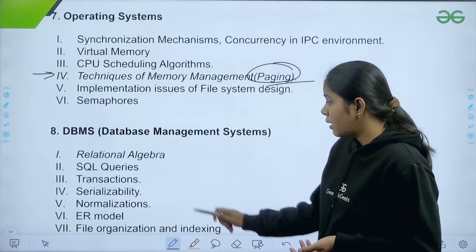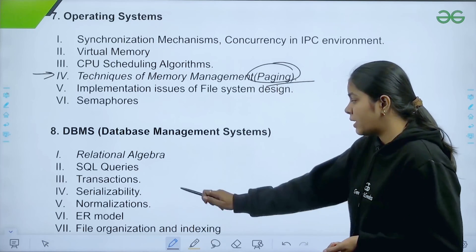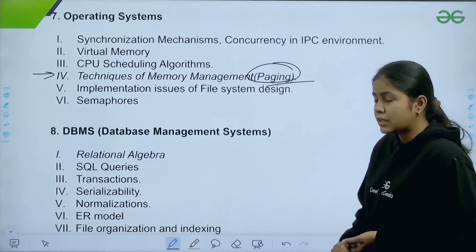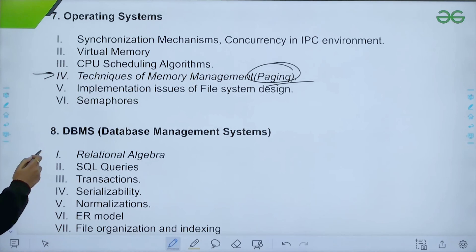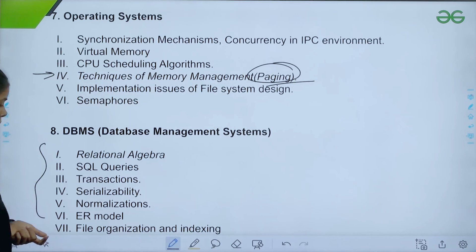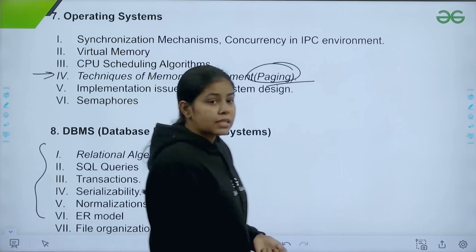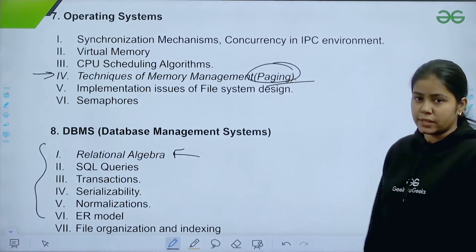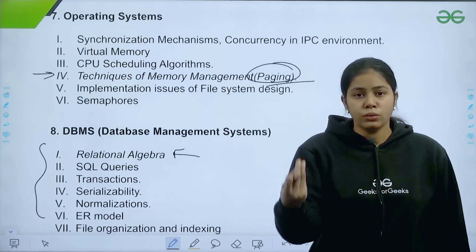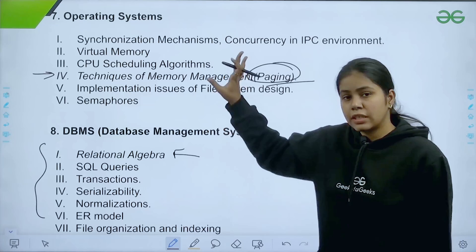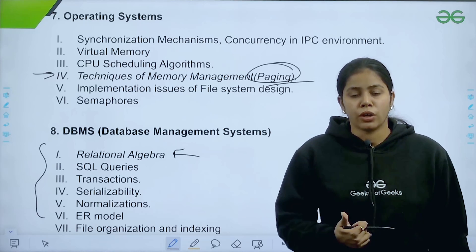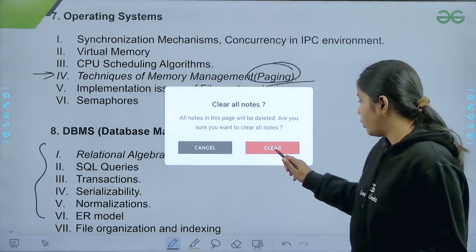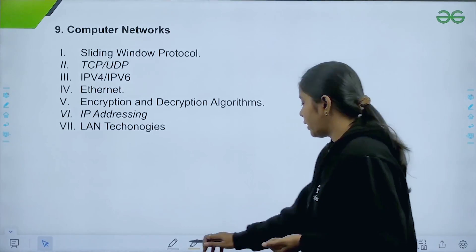The next subject is DBMS — Database Management System. The seven important topics are relational algebra, SQL queries, transaction serializability, normalization, ER model, file organization, and indexing. These are the most important topics of DBMS. The maximum weightage topic is relational algebra. When doing revision, remember these important topics that you cannot leave, and make sure you solve all PYQ questions from these topics.